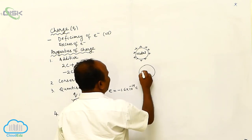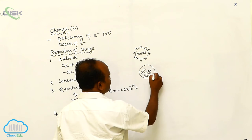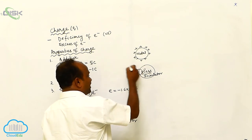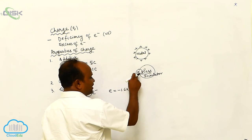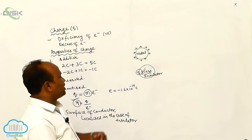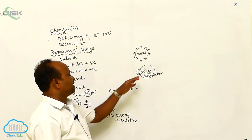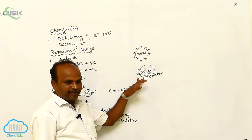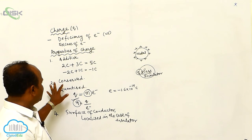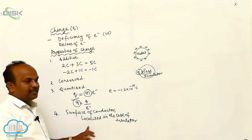Whereas, suppose this is glass — it is an insulator. For an insulator, if you give charge, whatever position you give the charge, it resides there only; it will not distribute throughout the surface. At whatever position we give the charge on the surface of the insulator, at that same particular place the charge is localized. Therefore, there are four fundamental properties: charge is additive, charge is conserved, charge is quantized, and charge resides only on the surface of a conductor and is localized in the case of an insulator.